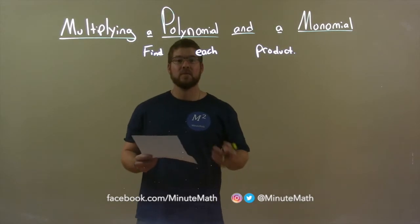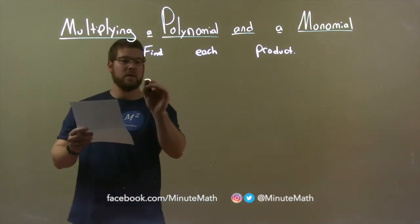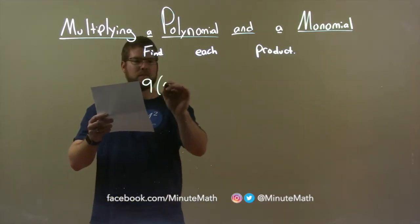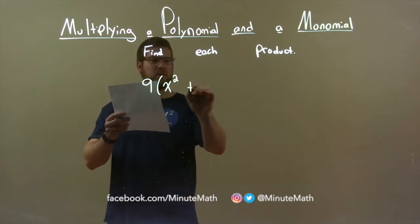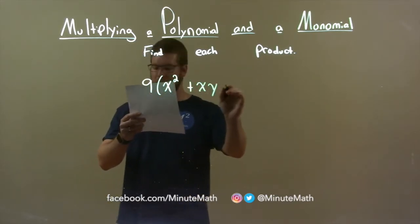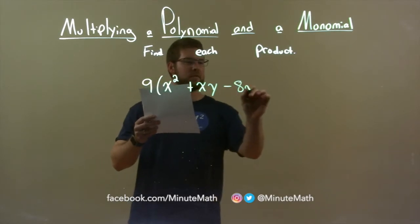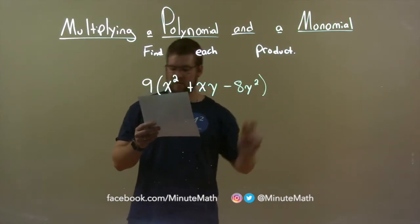So, if I was given this product, 9 times x squared plus x times y minus 8y squared. Alright.